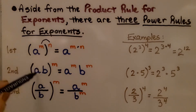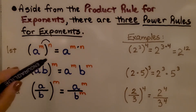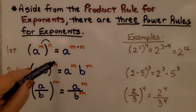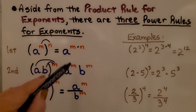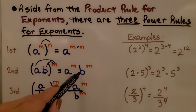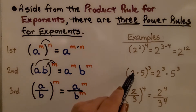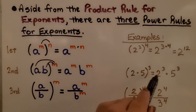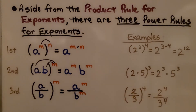For the second power rule for exponents, we've got 2 integers inside the parentheses: a times b raised to the m power. This m goes to each factor inside the parentheses, so we have a to the m multiplied by b to the m. An example would be 2 times 5 in parentheses raised to the third power, and that's equal to 2 to the third power times 5 to the third power.